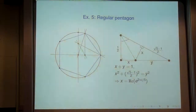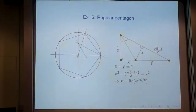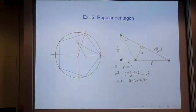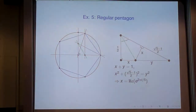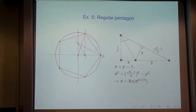To construct the regular pentagon, starting with points 0 and 1: take the line through 0 and 1 as the real axis, and the perpendicular line through 0 as the imaginary axis. Take the midpoint of the segment from 0 to i, then take the line passing through that midpoint and the point 1. Then take the angle bisector of that angle.